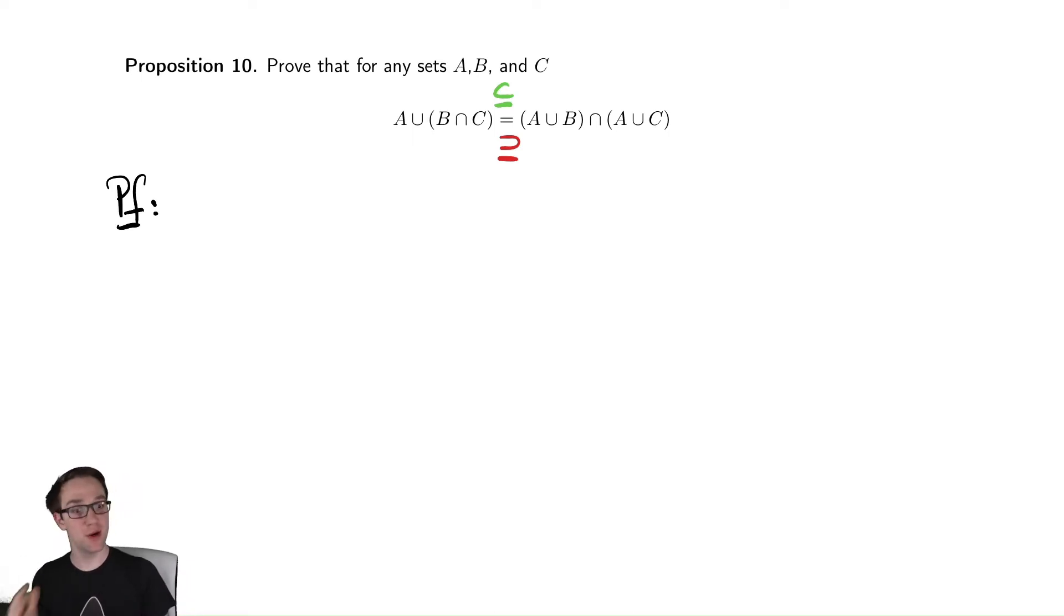An if and only if is two different implications, so you have two different proofs to do. Similarly, we're going to do two different things are subsets. So, let's see how we do this. We're going to show the one I did in green first. The way that we do this is we're going to let x be an element of the left-hand set,